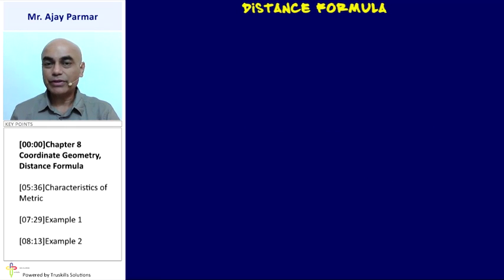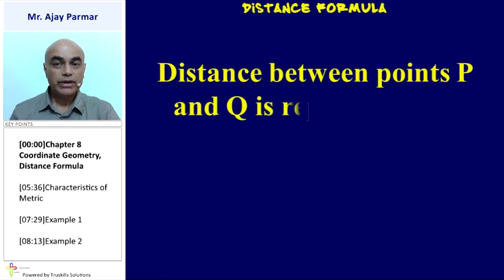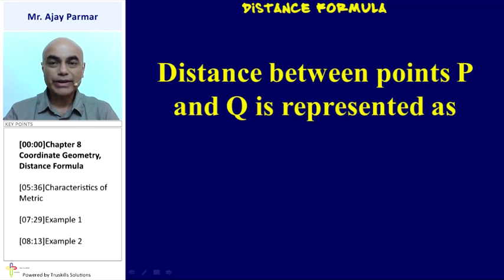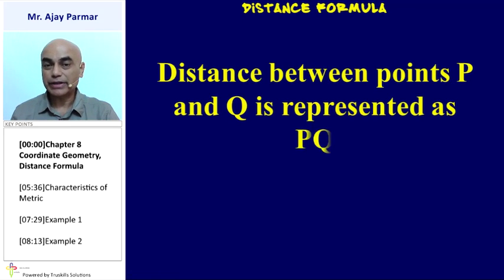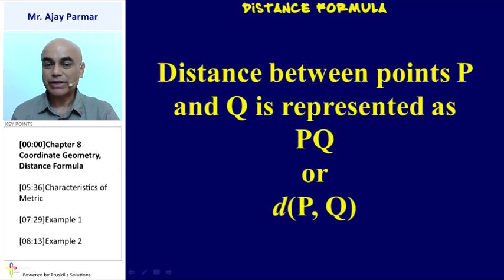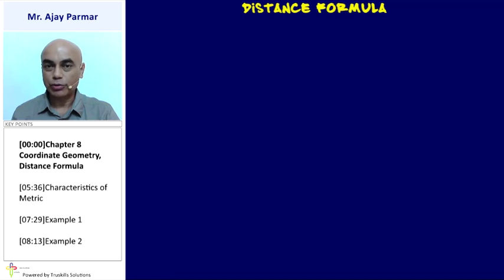Starting with the distance formula. The distance between any two points, say P and Q, is represented as simply PQ, or else it can be represented as D(P, Q), meaning the distance between points P and Q.